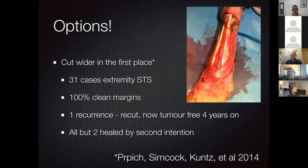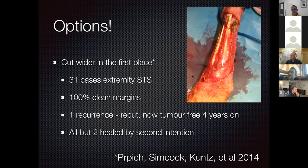The best option is to cut wider in the first place. A study of 31 cases of extremity soft tissue sarcomas where all were cut wide and left open to heal by second intention showed 100% clean margins with only one recurrence. Two out of 31 required a skin graft; 29 out of 31 healed by second intention. Even a 360-degree wound can heal by second intention. This surgery requires no special equipment—just the confidence to do it.